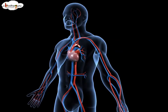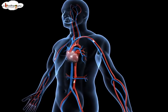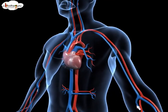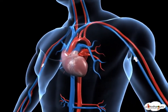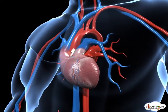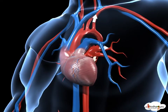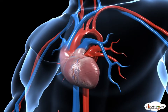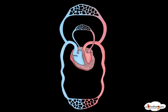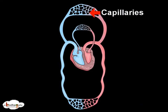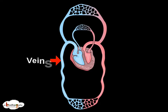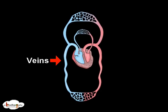Arteries get divided into very narrow blood capillaries where exchange of substances takes place. Capillaries form a web-like network to reach maximum cells, and then join together to form veins.